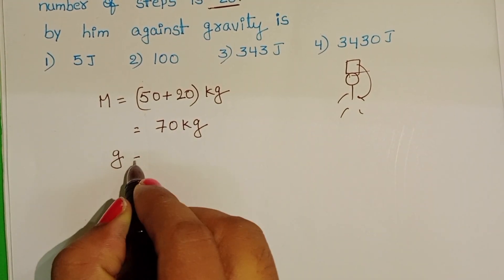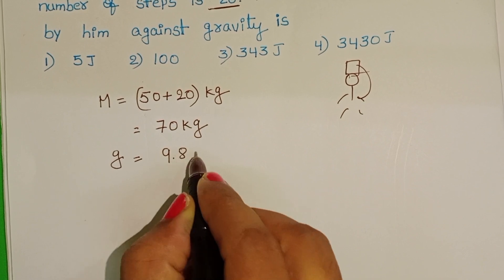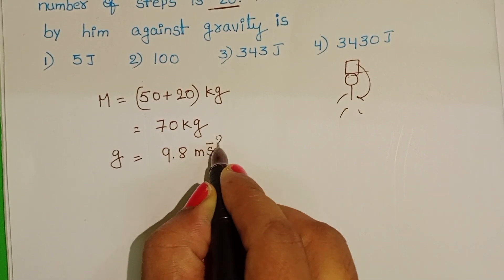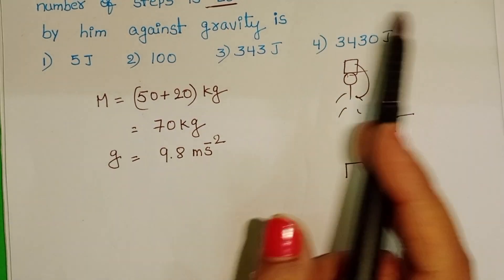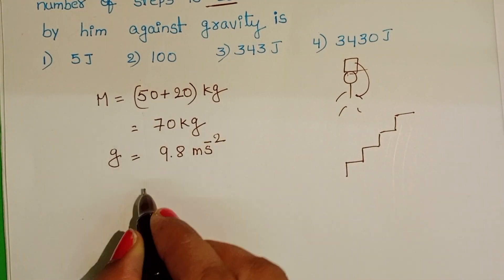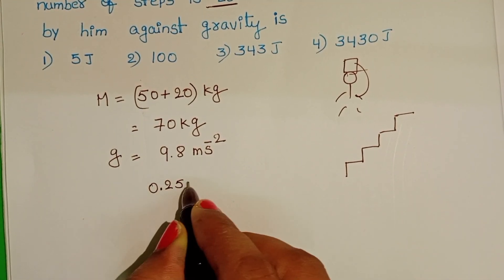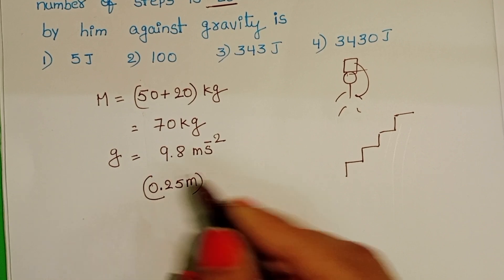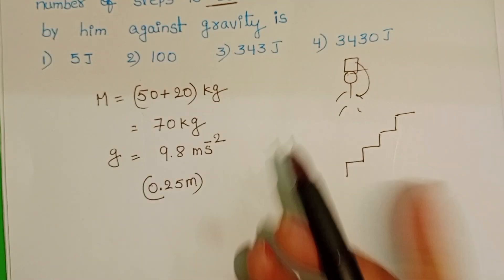Take acceleration due to gravity as 9.8 m per second squared. Given height of each step is 0.25 m, and number of steps is 20.